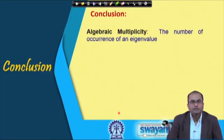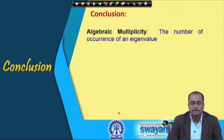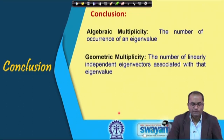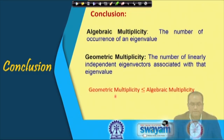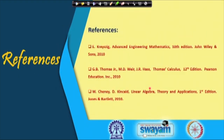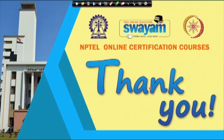In conclusion, this lecture covered algebraic multiplicity — the number of occurrences of an eigenvalue as a root of the characteristic equation — and geometric multiplicity — the number of linearly independent eigenvectors associated with that eigenvalue. Geometric multiplicity is always less than or equal to algebraic multiplicity. We also introduced similar matrices: B and A are similar if B = P⁻¹AP for some invertible matrix P.